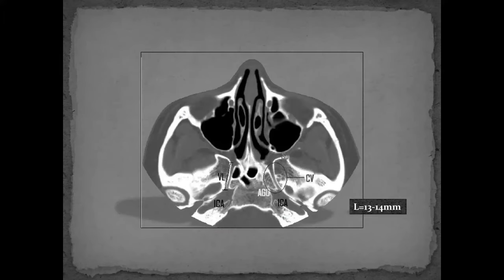This is also a board-relevant slide. Starting front to back on axial CT: nasolacrimal duct, concha bullosa in the middle turbinate, maxillary sinus, pterygopalatine fossa, pterygomaxillary fissure, infratemporal fossa, and Vidian canal. In 90% of cases the Vidian canal runs medial to lateral, measuring about 12–14 mm in length — shown in yellow. The internal carotid is shown in red, almost attached to it. The average distance between the posterior canal wall and the petrous carotid is 2–4 mm. Foramen ovale and foramen spinosum are also visible.